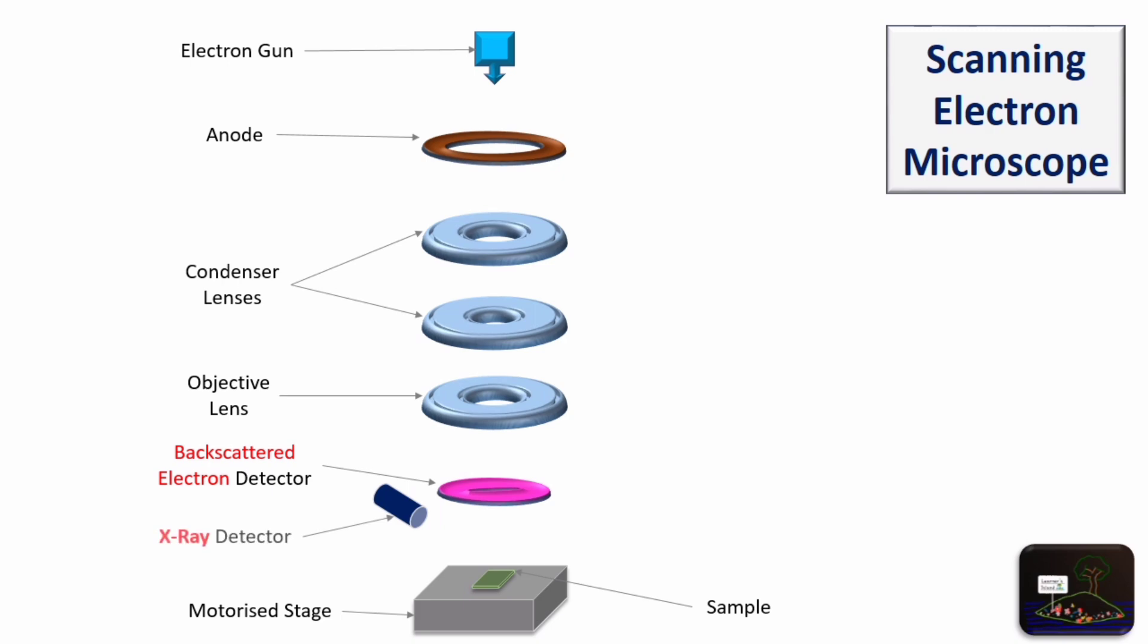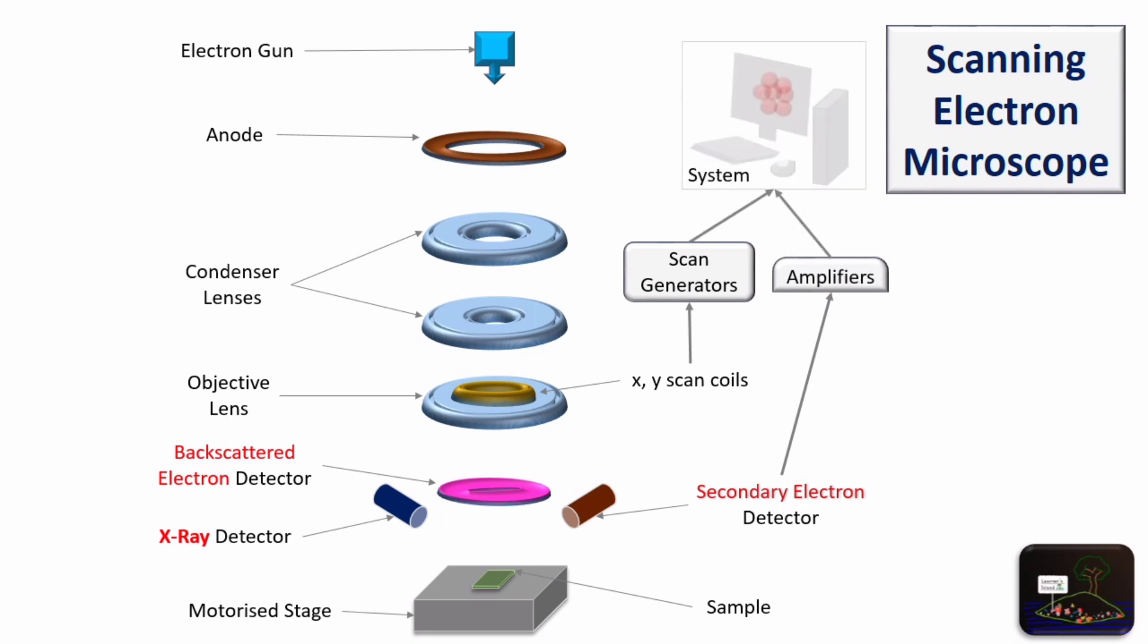The electron beam reflects back as three signals: backscattered electrons, x-rays, and secondary electrons, which are received by respective detectors and sent through amplifiers to computer to generate graphical image of the scan. Shown here is the actual image generated by SEM.